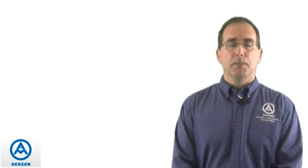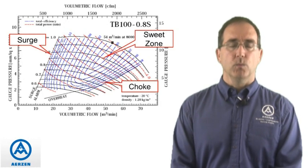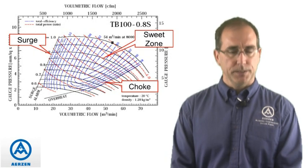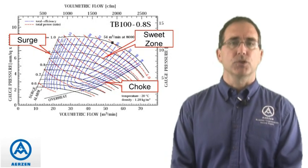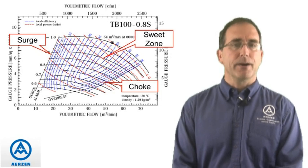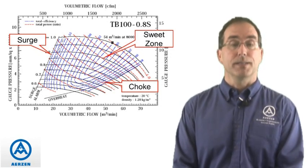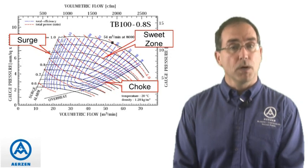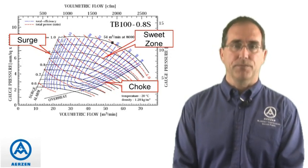Controlling a high-speed turbo blower means that blower has to run within the performance map you see on the screen. The sweet zone, which you can see right in the center of the diagram, is the area of highest efficiency. That's the place where we would prefer to run the most, because you get the most bang for your buck.